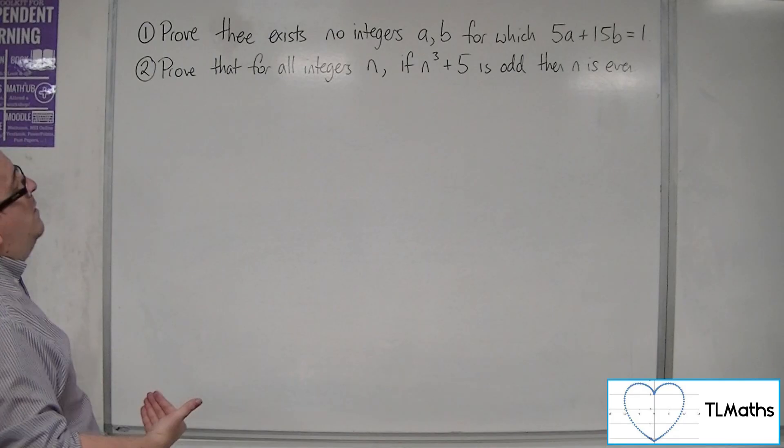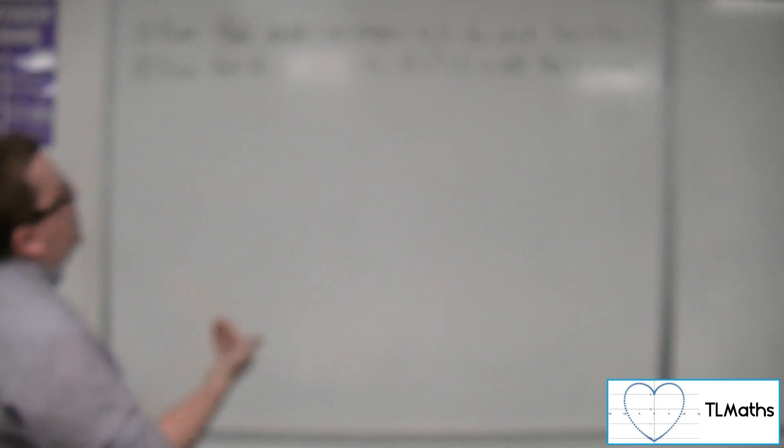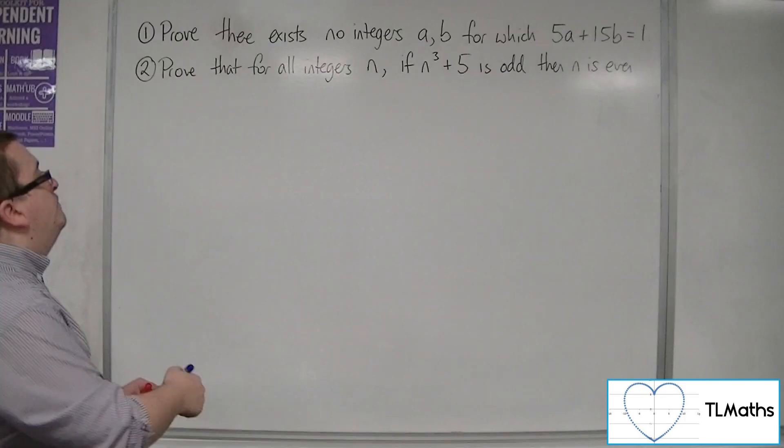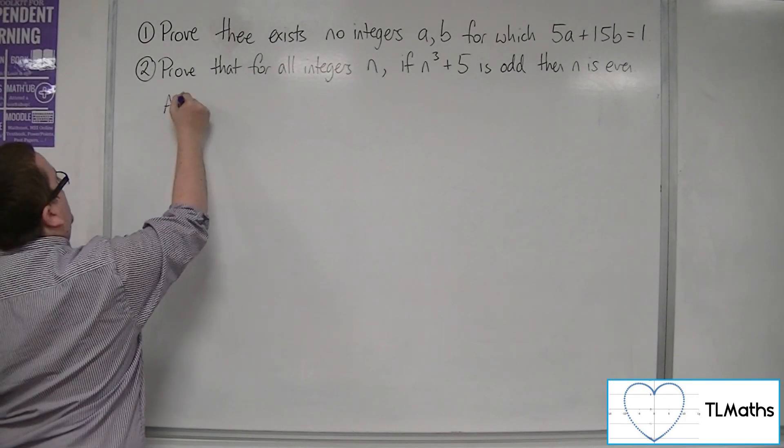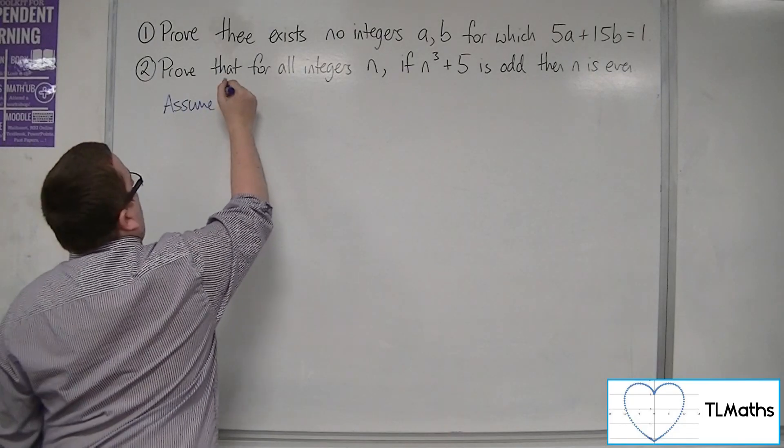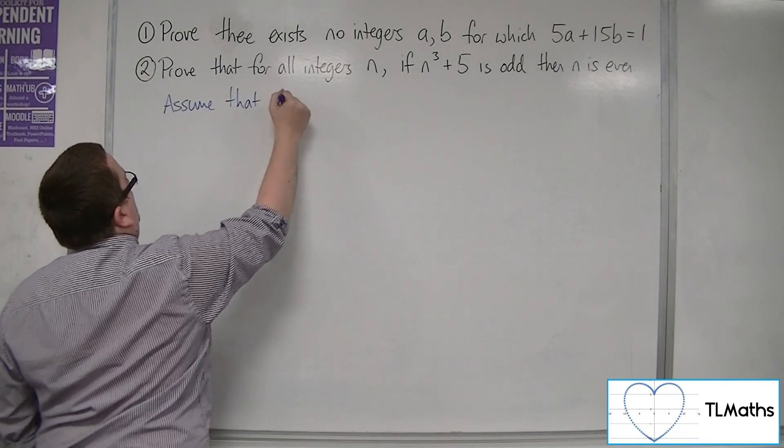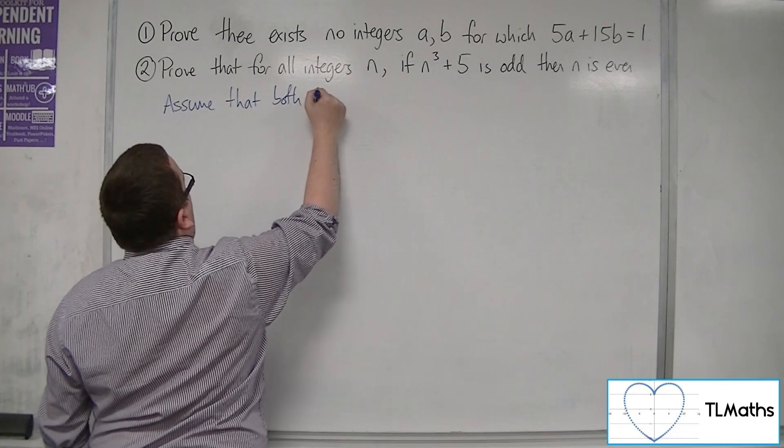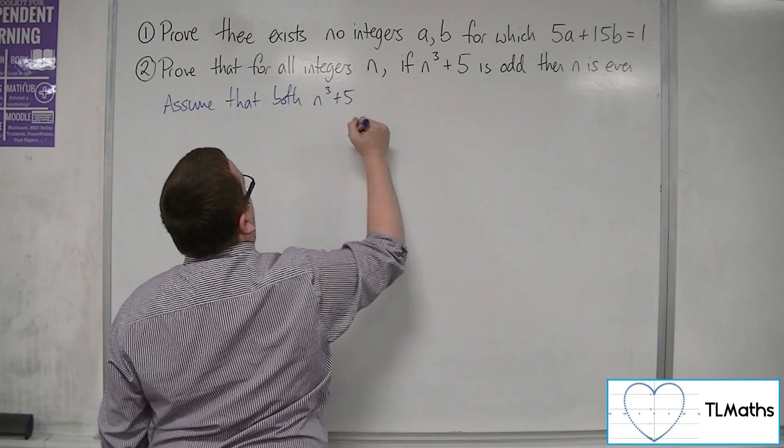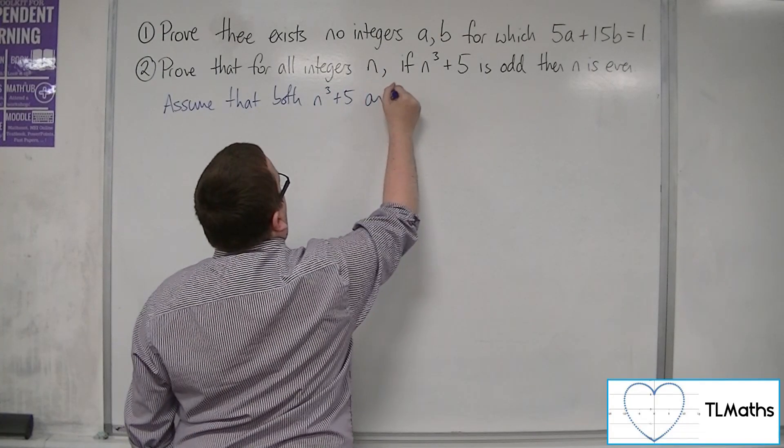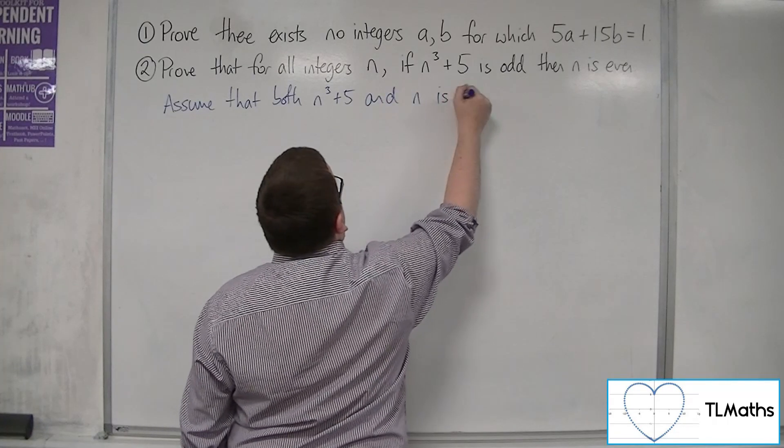Okay, so we're going to assume that n cubed plus 5 is odd and n is odd. So assume that both n cubed plus 5 and n is odd.